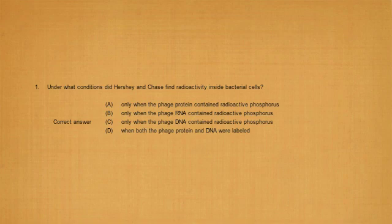The first question says, under what condition did Hershey and Chase find radioactivity inside bacterial cells? Well, what they did was they involved the bacteria known as phage, and they found whenever the phage was put in, the DNA contained radioactive phosphorus. So here, the correct answer for question number one would be option number C.